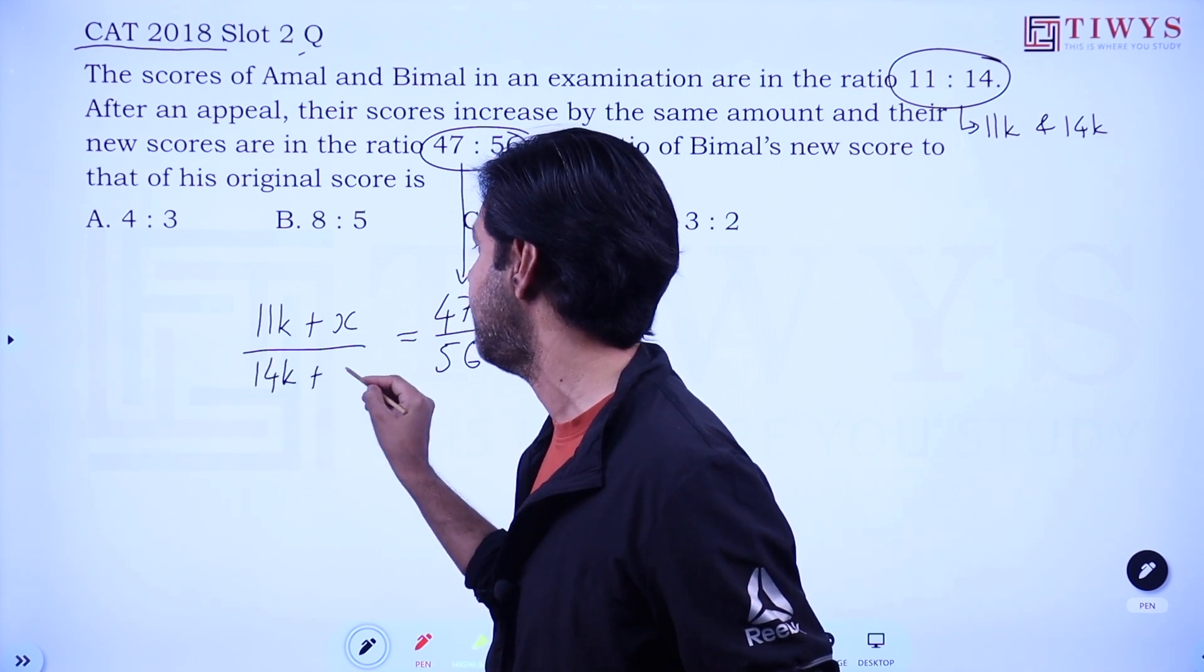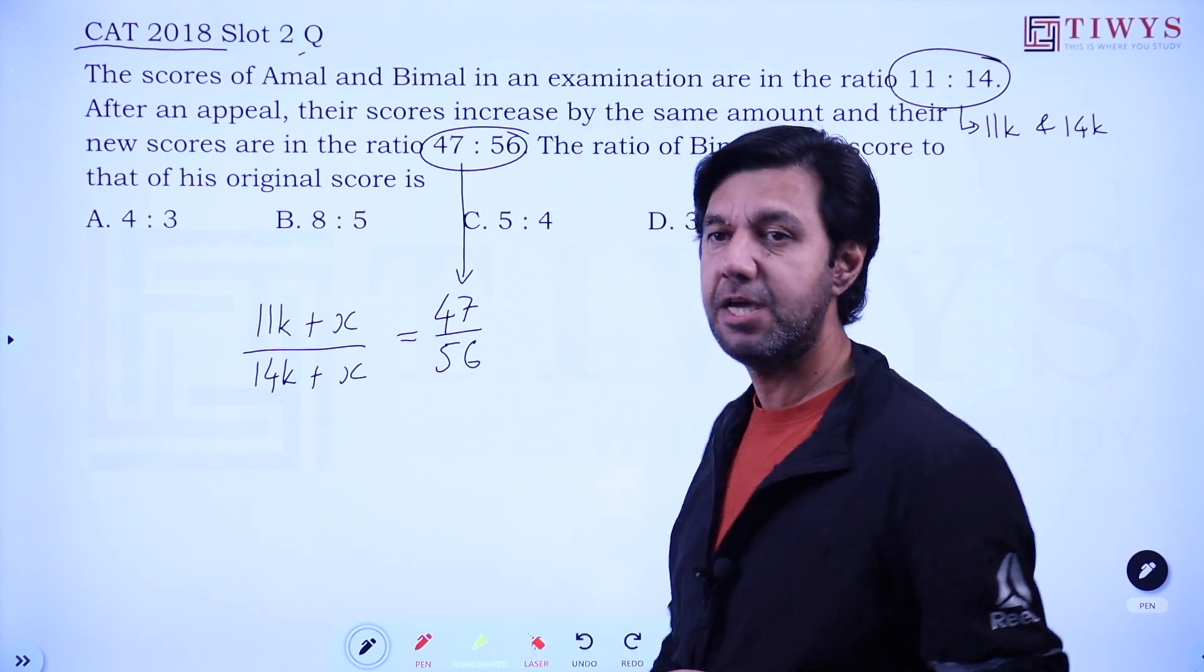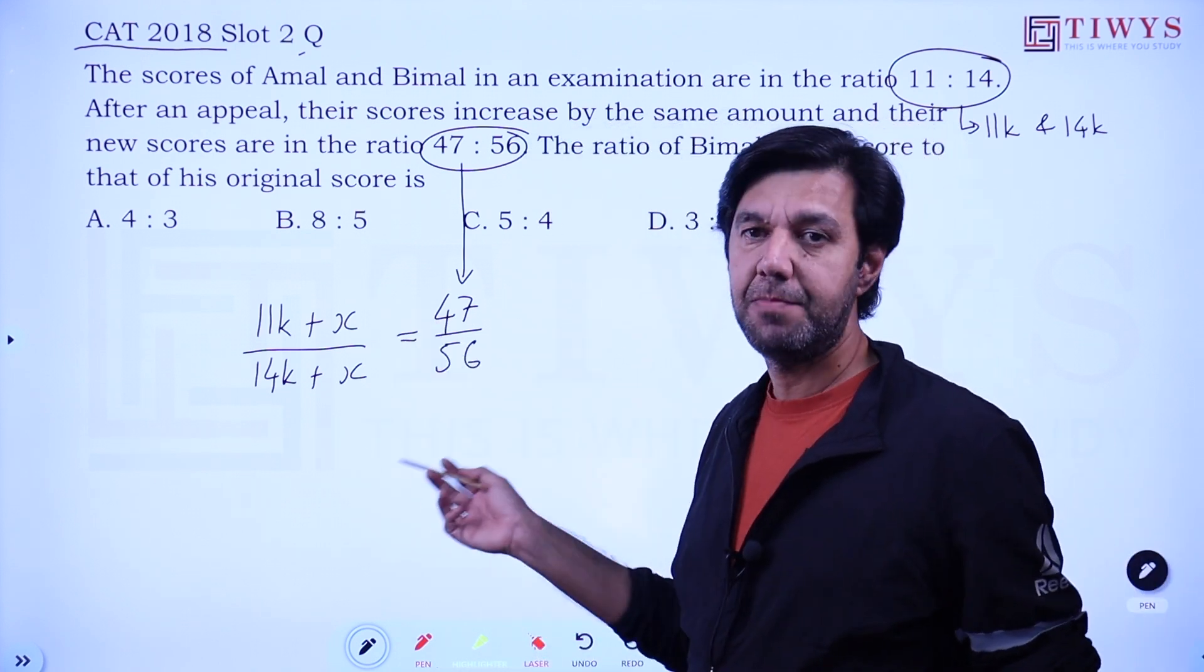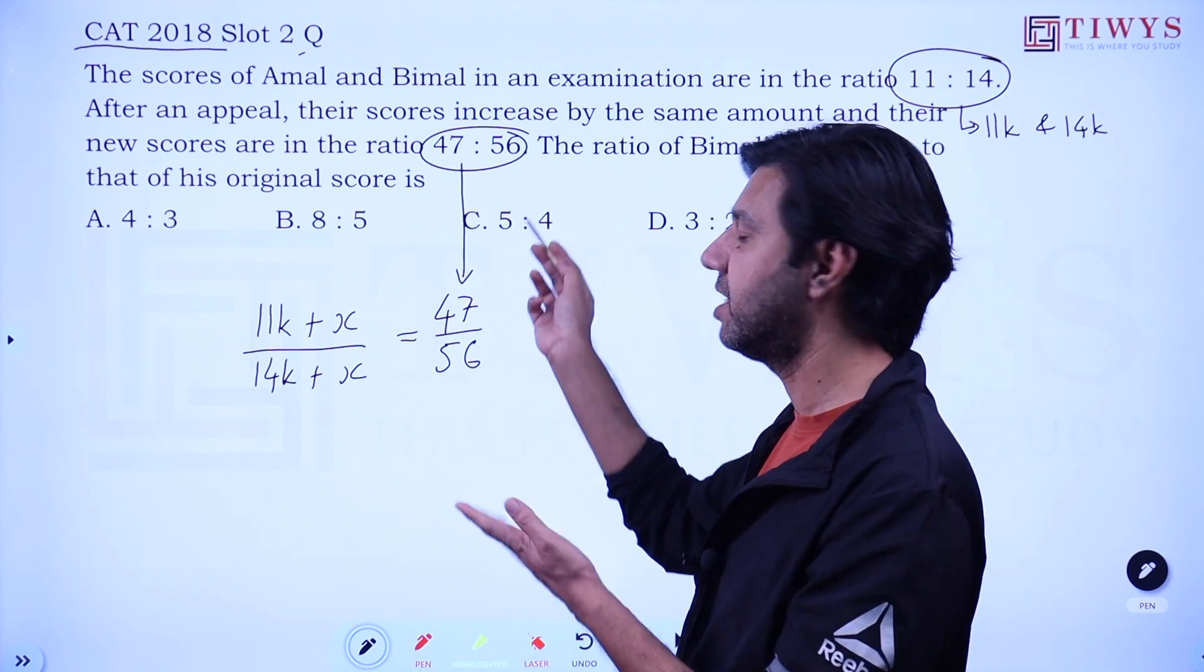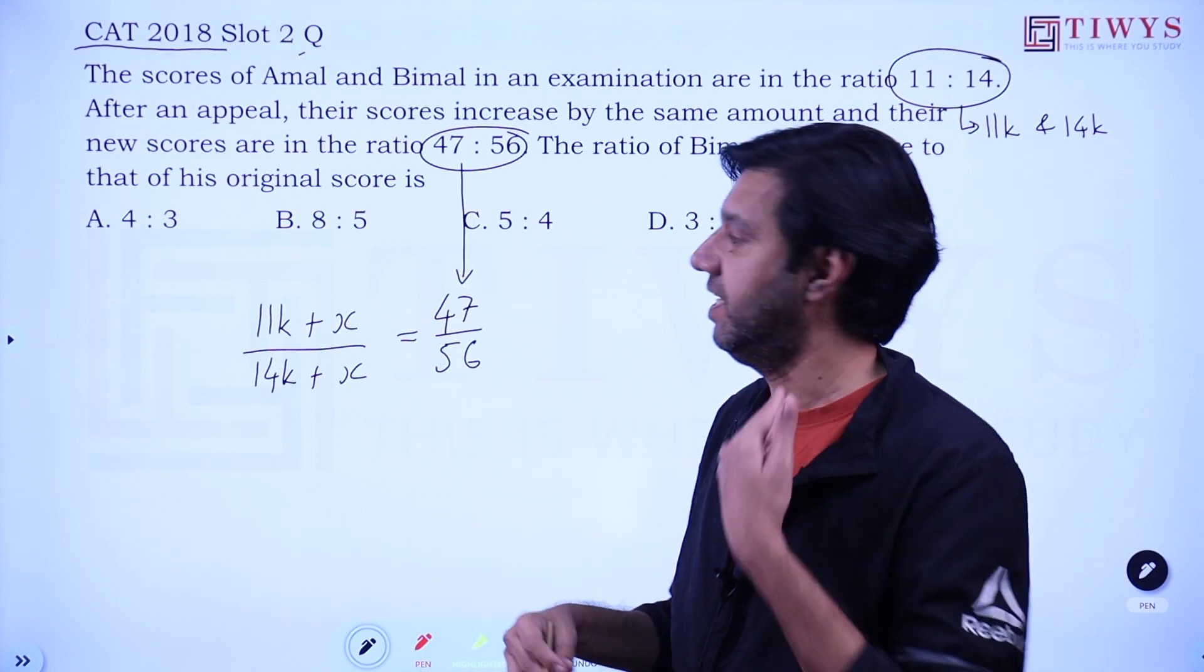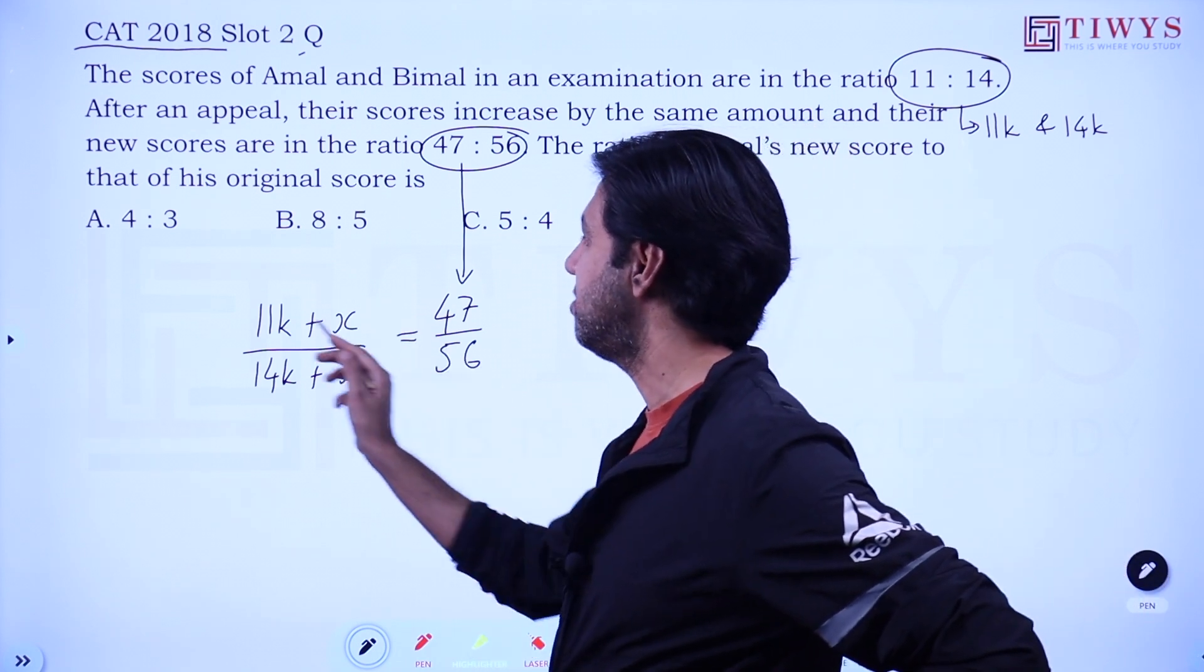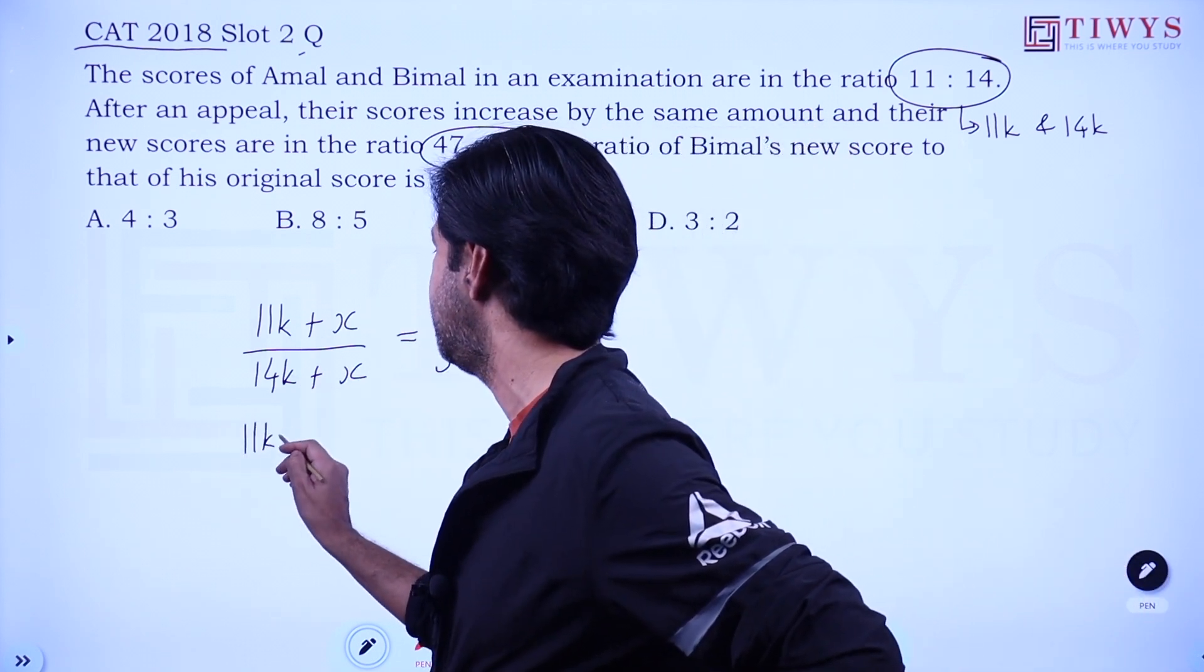So let's say the increase is x. In the case of Bimal also, the increase will be the same x. So we have this equation, simple equation. Cross multiply, you'll get x in terms of k, and once you get x in terms of k, I'm pretty sure the way ahead is going to be obvious.